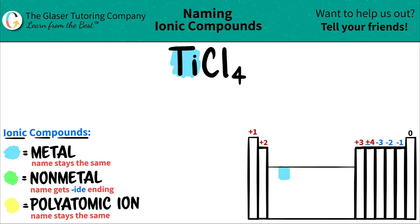Chlorine, if we look on the periodic table, chlorine is part of the halogens — it's in this group right here. The halogens, also known as 7A or 17, that is a non-metal category. So chlorine is a non-metal.